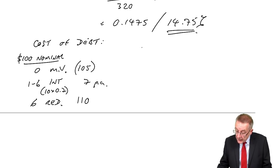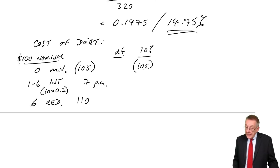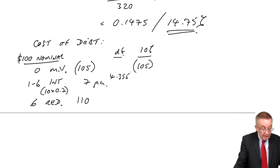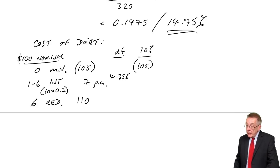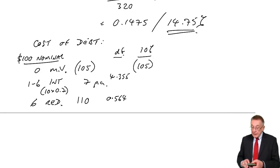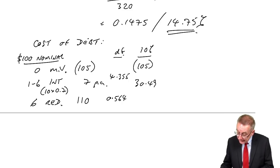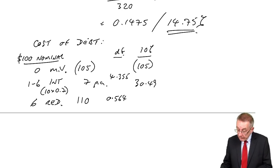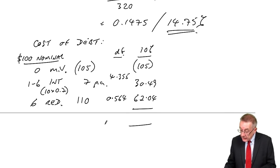It's the internal rate of return, two guesses approximate. I'll do it at 10%. $105 outflow. The annuity, six years at 10%, the factor is 4.355. The redemption, the ordinary present value factor for six years at 10% is 0.564. The present value is 7 times 4.355 equals 30.49. The redemption, 110 times 0.564 equals 62.04. The net present value is minus 12.47.